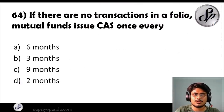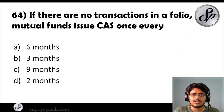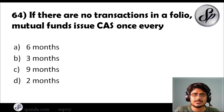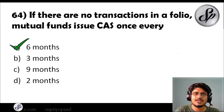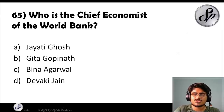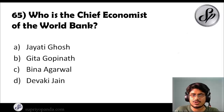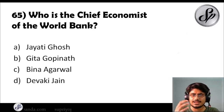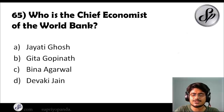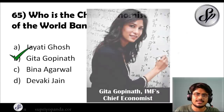Question sixty-four: if there are no transactions in a folio, a mutual fund issues the CAS — consolidated account statement — once every how long? The answer is once every six months. Question sixty-five: who is the chief economist of the World Bank? The answer is Gita Gopinath — a very accomplished and distinguished person who gives many interviews on news channels.